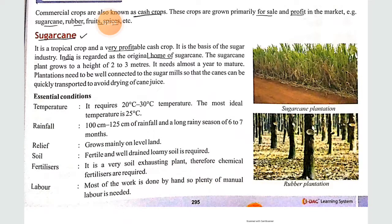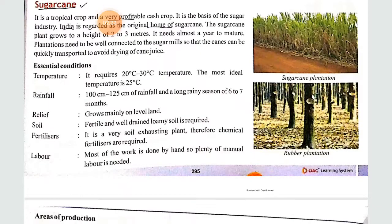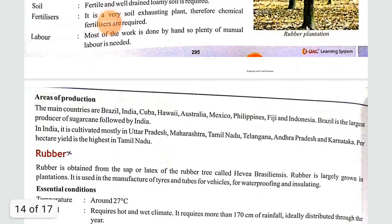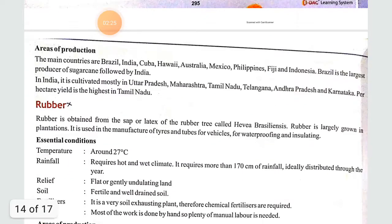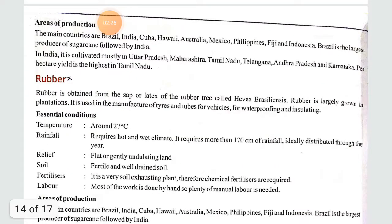Essential conditions — how much temperature is required, how much rainfall is needed, what kind of soil is required, fertilizers and all — you will read by yourself. Now coming to areas of production, the main producing countries are Brazil, India, Cuba, Hawaii, Australia, Mexico, Philippines, Fiji, and Indonesia.